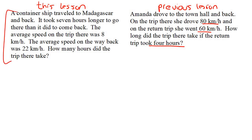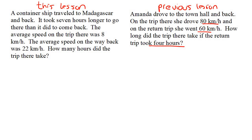In this lesson, the questions take on a bit of a different path. It says that a container ship traveled to Madagascar and back. It took seven hours longer — it's not saying it took seven hours, it's saying it took seven hours longer to go there than it did to come back. The average speed on the trip there was eight, and on the trip back was 22. So the main thing about this lesson is that they're going to start using words like 'longer,' 'less time,' or 'faster,' and they're not going to be exact about the values.